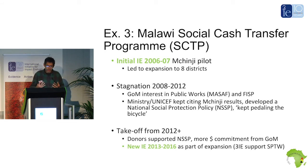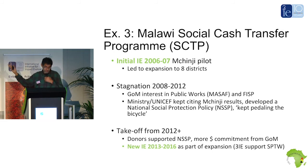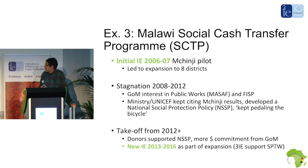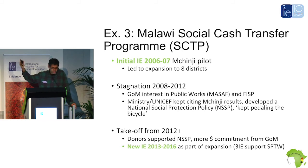But what was actually going on was that the evidence continued to be brought out as necessary, providing important input into a national social protection policy. In 2012, there was a takeoff — a new life based on this policy and the continued repetition of those results over four years. Suddenly donors came on board, the government put in some money, and the program scaled up. Now the program is in all districts, over 100,000 households, with close to 10% of the population being reached.